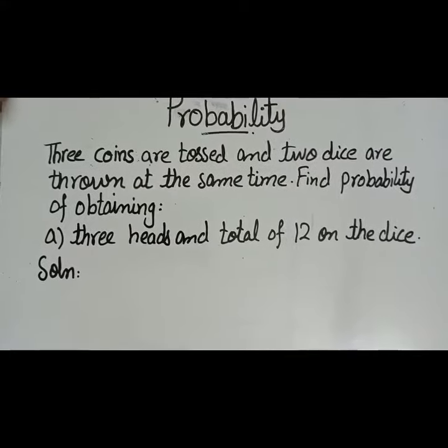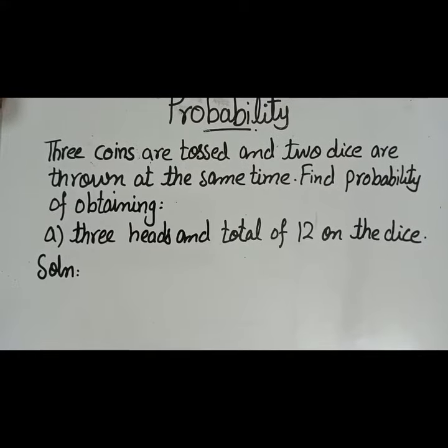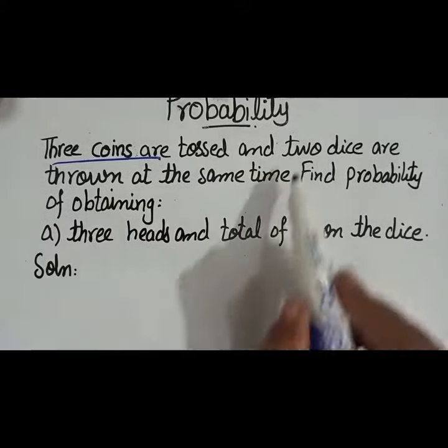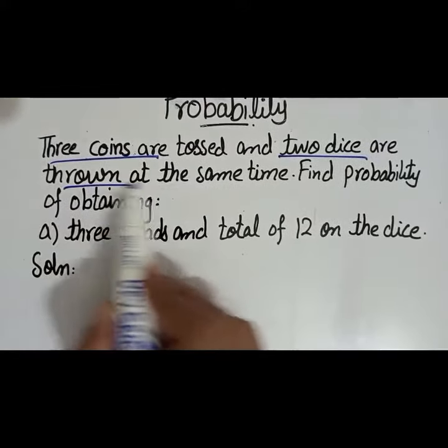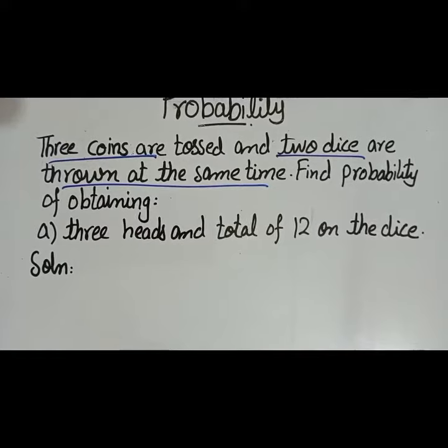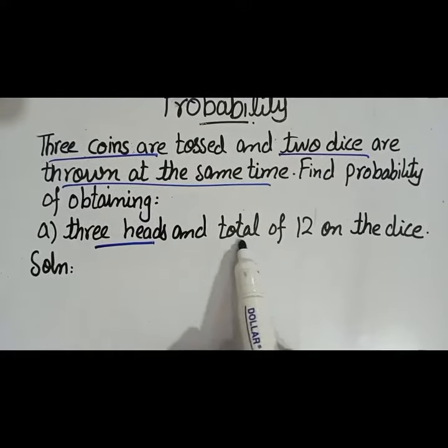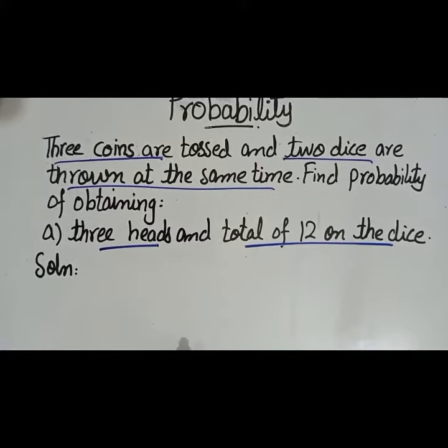The next question on probability is: three coins are tossed and two dice are thrown at the same time. Find the probability of obtaining three heads and total of twelve on the dice. First of all, we have to draw the sample space of both the spaces.